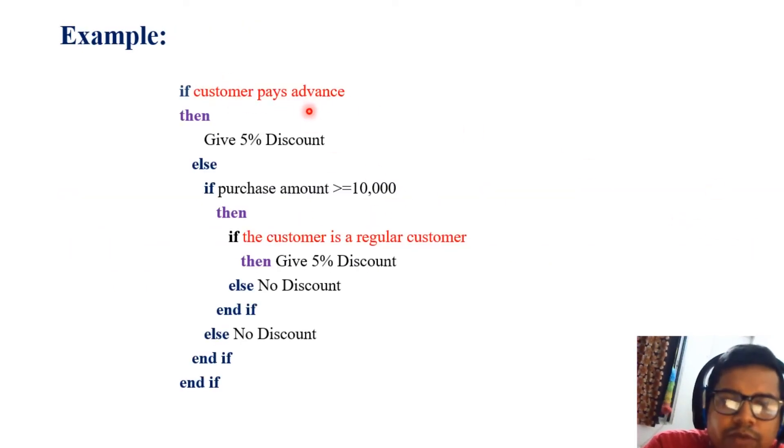Here's an example in structured English: if customer pays advance, then give 5% discount. Else, if purchase amount is greater than or equal to Rs 10,000, then if the customer is a regular customer, then give 5% discount, else no discount. Else no discount. So if purchase amount is greater than 10,000, you have two options: if it is a regular customer you give 5% discount, otherwise no discount. If purchase amount is less than that, then no discount is given.